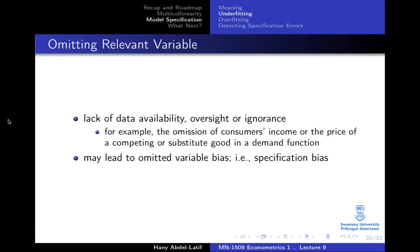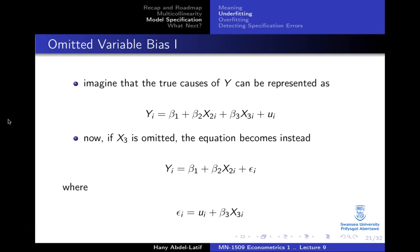When you do not explicitly include all important variables in your model, the impact of these variables will be included into the error term, and this will lead to what we call omitted variable bias. Let me show an example here.